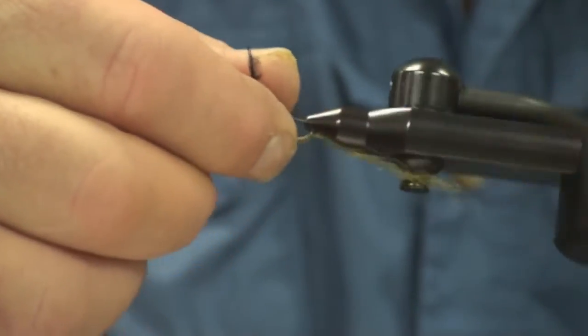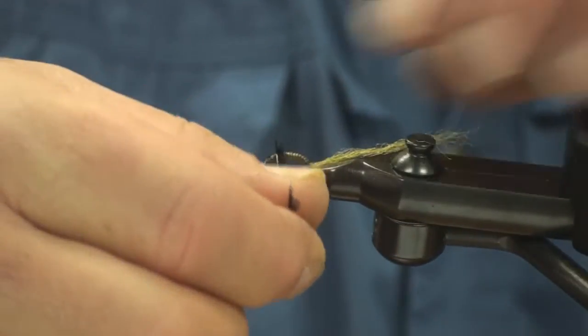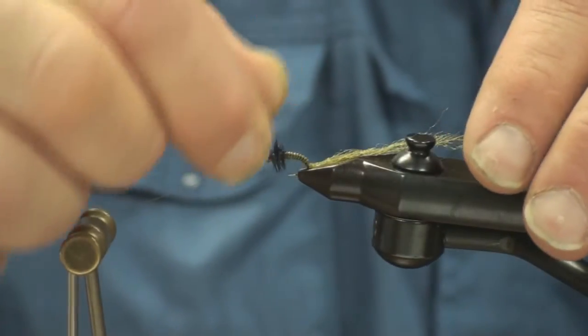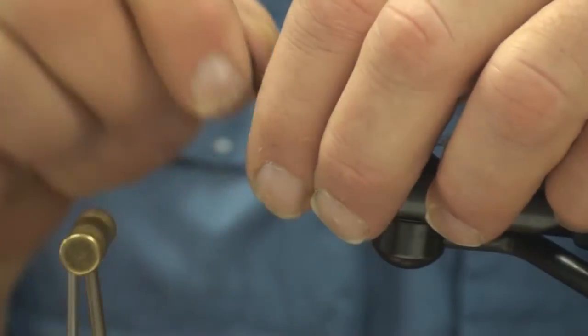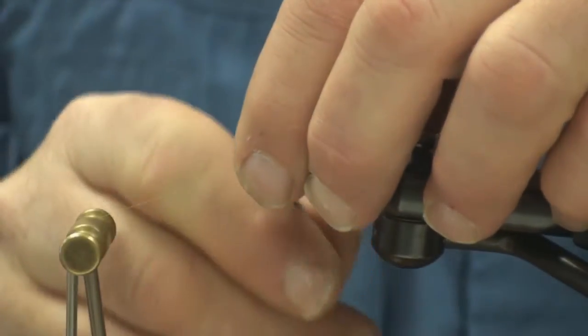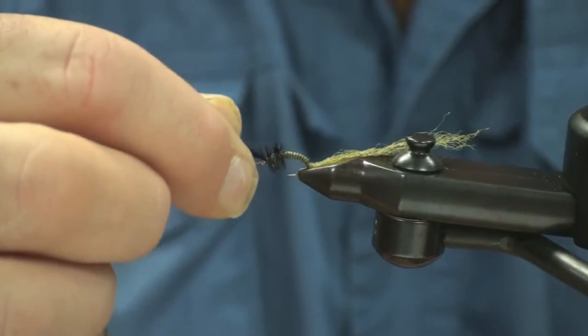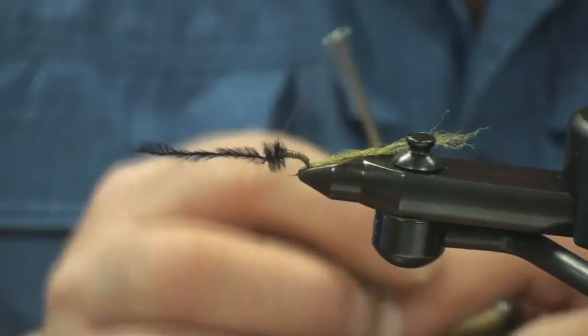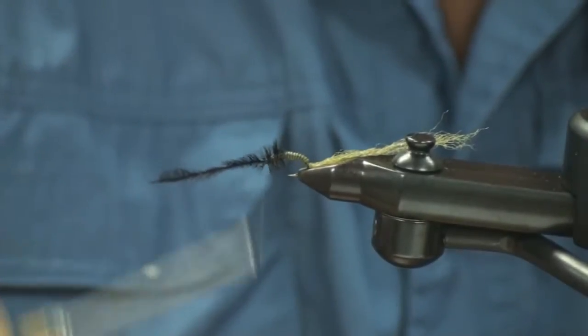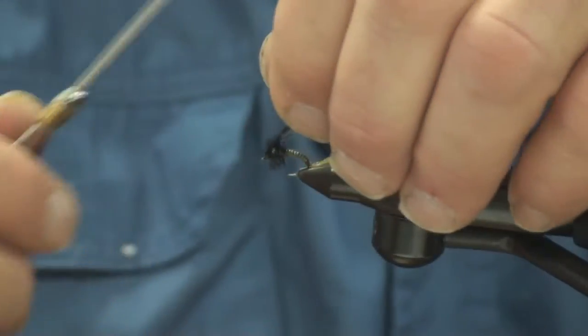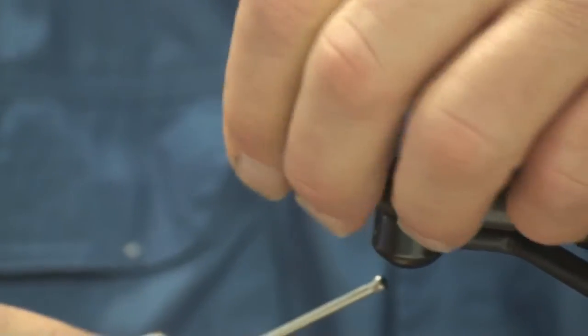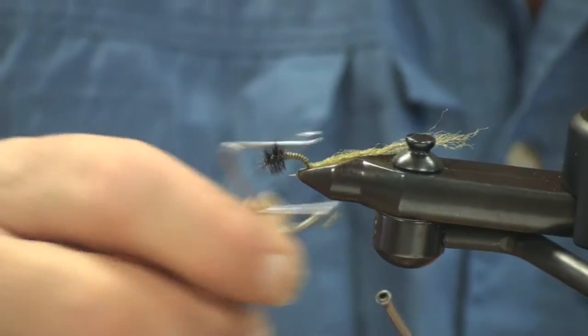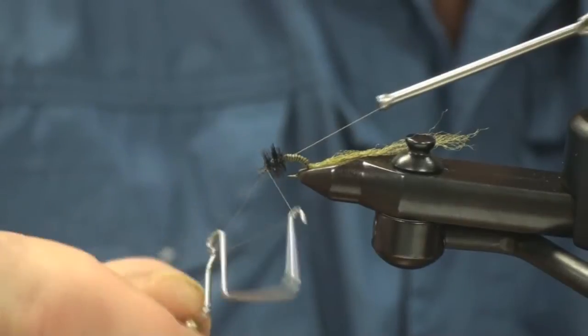Just proceed to wrap this forward. Now it doesn't have to be a pretty tie off because you'll see why in the next step. Three wraps behind, three wraps in front. Now you're probably saying, oh, that looks like a mess there right now.